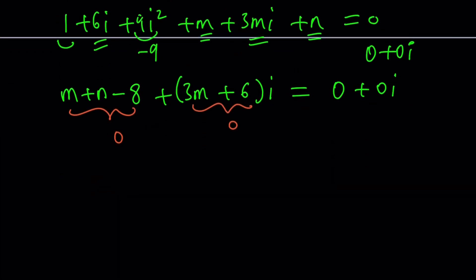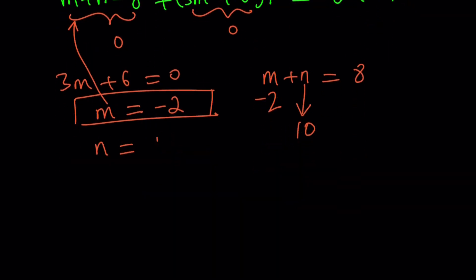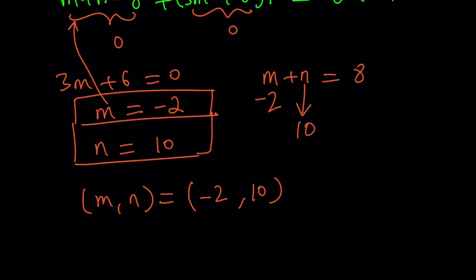We get a system of equations. From the imaginary part, 3m plus 6 equals 0, so m equals negative 2. Now plugging into the real part equation, m plus n equals 8: if m is negative 2, then n must be 10. So m equals negative 2 and n equals 10 — the unique ordered pair solution, written as (−2, 10).